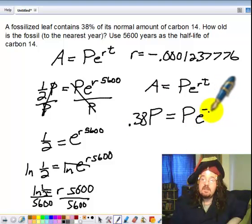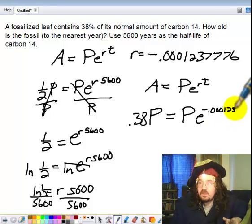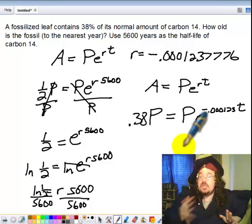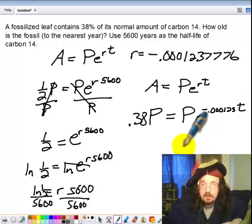R is negative 0.000123 blah blah blah, and I'm going to chop it off right there, but I'm going to keep it in my calculator, times T. And then, just like the problem before, the part before, we do divide.